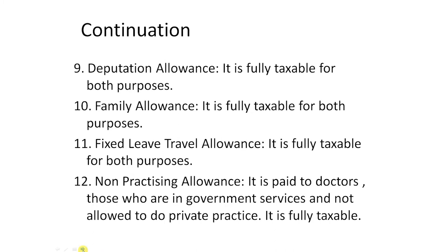Next one: deputation allowance. Deputation allowances are those allowances which are provided to the employees who are on deputation to any other places or any other branches. It is also fully taxable for both purposes. Family allowance — the allowance with respect to family in order to meet the expenses of the family — is also fully taxable for both purposes.